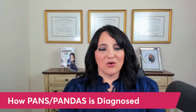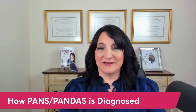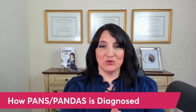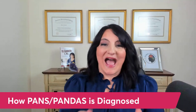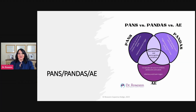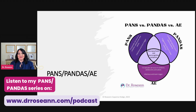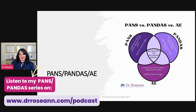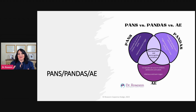So let's talk about how PANS and PANDAS and autoimmune encephalopathy — these clinical conditions that are different — are actually diagnosed. PANS, PANDAS, and autoimmune encephalopathy are three separate conditions. If you didn't listen to the previous episodes, please do, because it's going to dive into what they are. But all three conditions result from a misdirected immune response where the body attacks itself and produces inflammation.